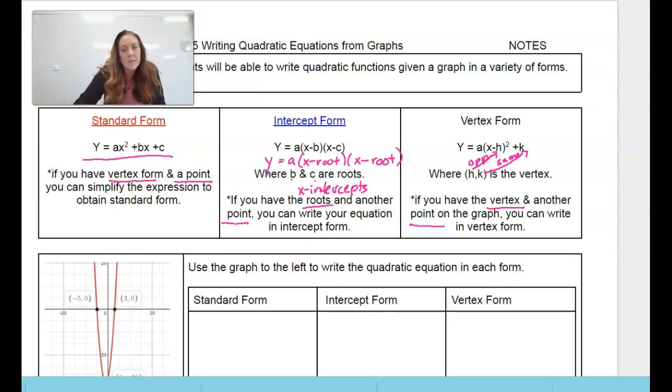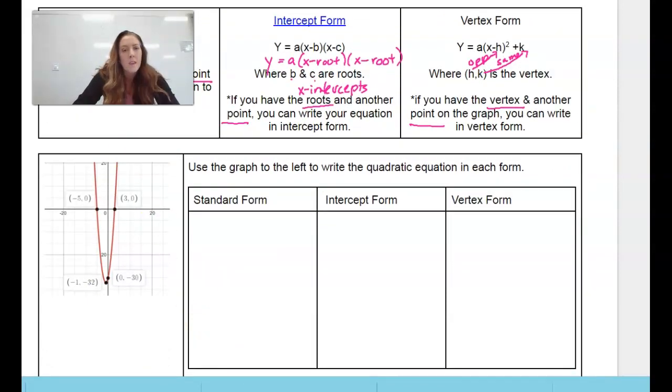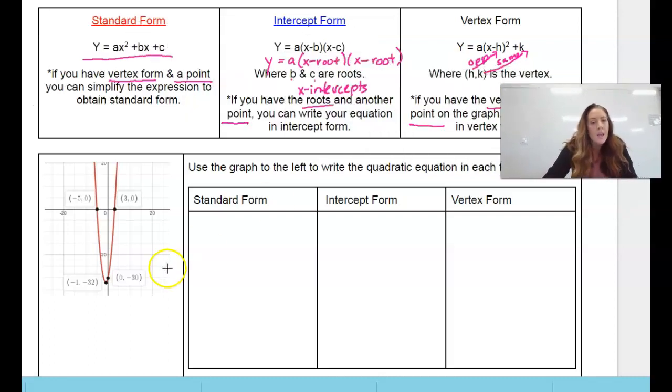Okay, so let's look at our graph. And I know we are given the roots, which is negative 5 and 3. They tell you the ordered pairs. We're given a point, 0, negative 30, and we're given another point, negative 1, 32, which also happens to be the vertex. So on this parabola, we're actually given two additional points. So you can use either one.